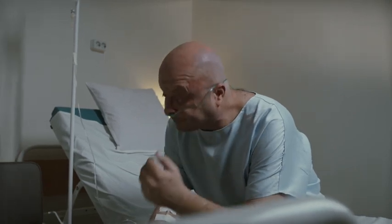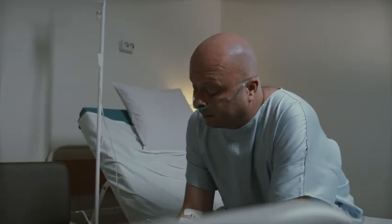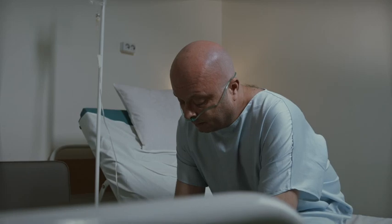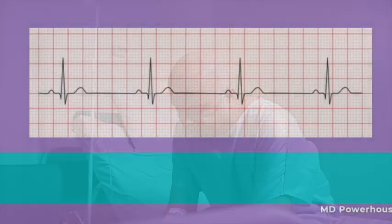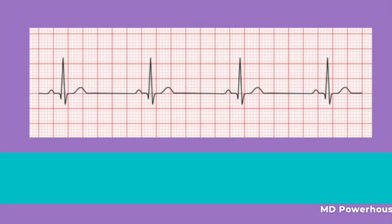A patient presents with symptoms of chest pain, fatigue, and lightheadedness. An ECG is done and is shown here. What is the first step in management of this patient? Atropine, because as you can see in this ECG, this patient is bradycardic.